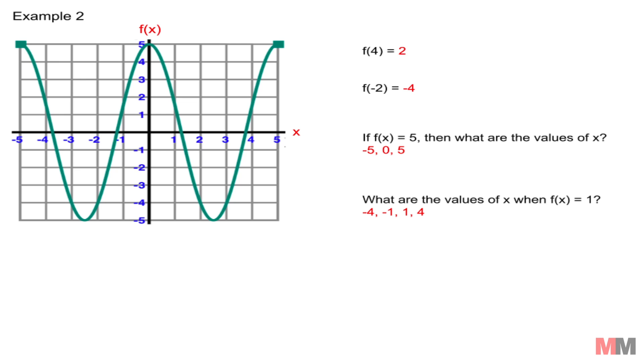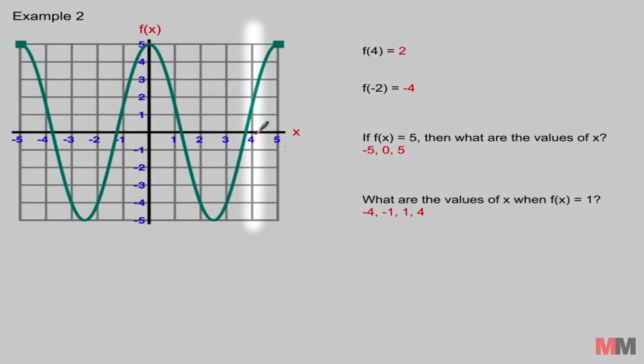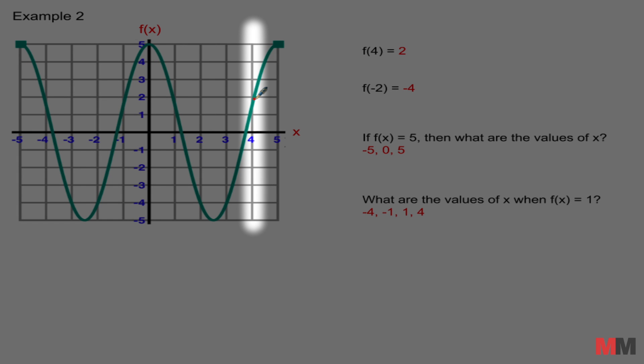Hope you got these answers. Here are the answers for example 2. So when you get a number inside here, f of 4, this represents your x so you just have to go through the x axis until you get to 4 and then read what the y value is. That's going to be 2.